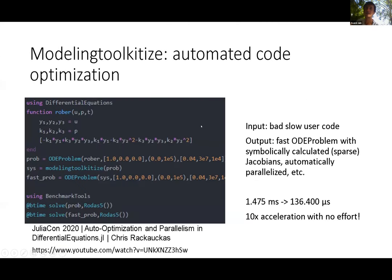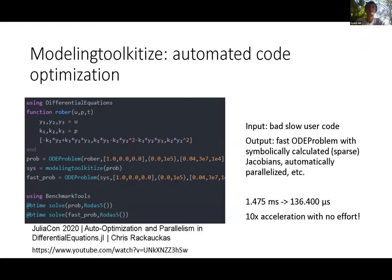The ModelingToolkitize function takes a standard ODE problem from the DifferentialEquations ecosystem and either auto-parallelizes it or performs structural simplification via index reduction. On a simple stiff rover problem, this gives a 10x increase in speed. What would it mean for your science if you could build 10 times bigger models in the same amount of time? It would be a game changer.